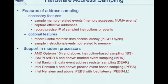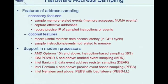We use address sampling. Address sampling is supported by hardware, and we define it as a sampling mechanism that supports at least three necessary features: first, it samples memory-related events like memory accesses, cache misses, or NUMA events such as local or remote accesses; second, it captures the effective address touched by the sampled memory access; and third, it records the precise instruction pointer of the sampled memory access.